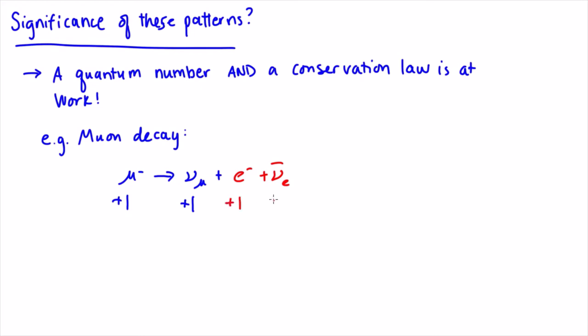You also have a plus one for the electron and a minus one for the anti-electron neutrino. So in this reaction, the lepton number for each lepton family is conserved.